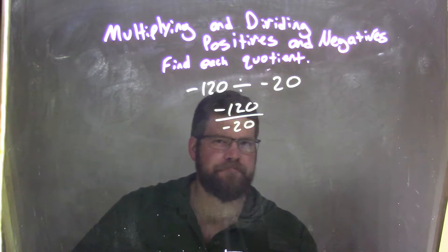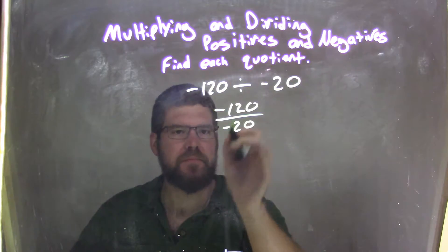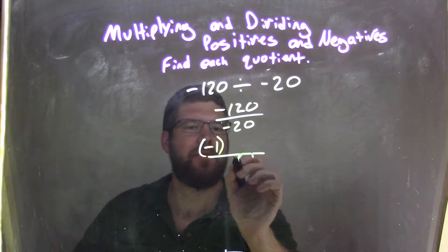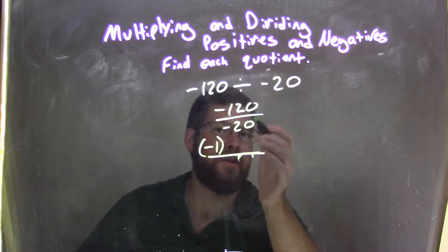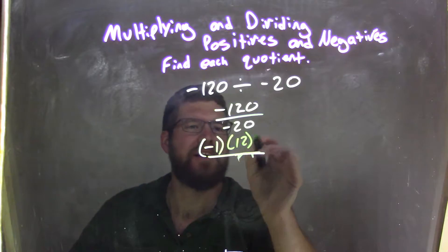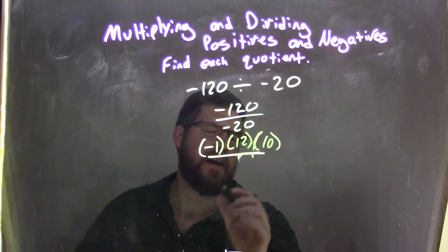We're going to break it down. Fairly simple here, right? Negative 120, I can break down to be negative 1 on the outside here. And then negative 120, or 120, is easy to be just 12 times 10. And that's what I'm going to break it down as.